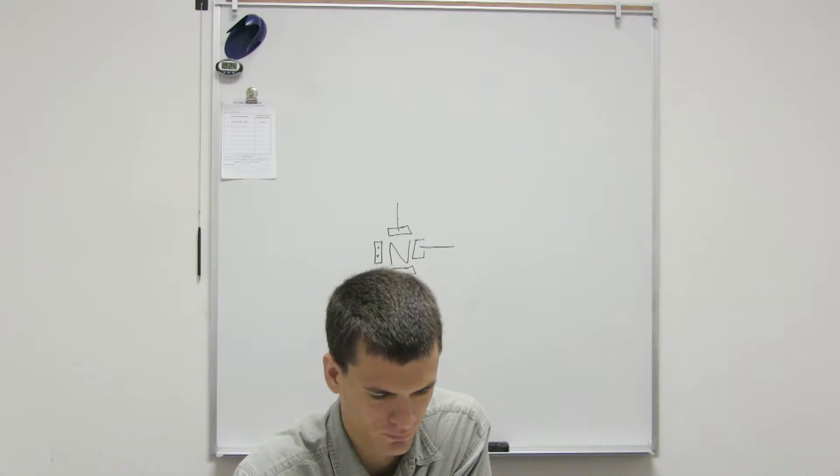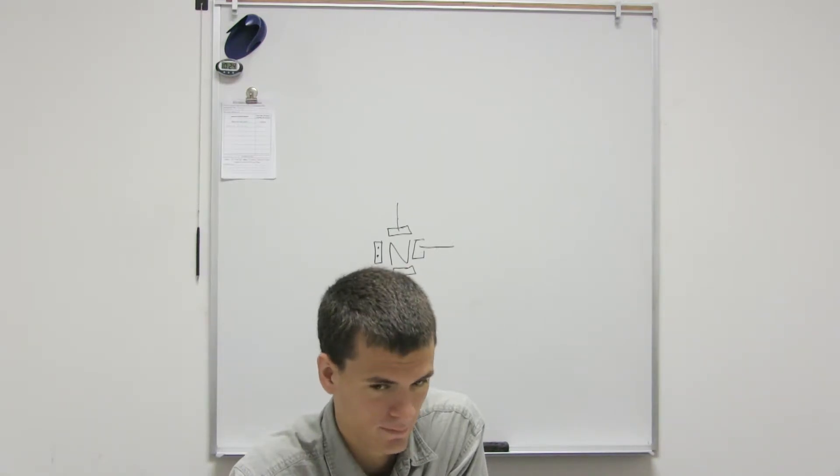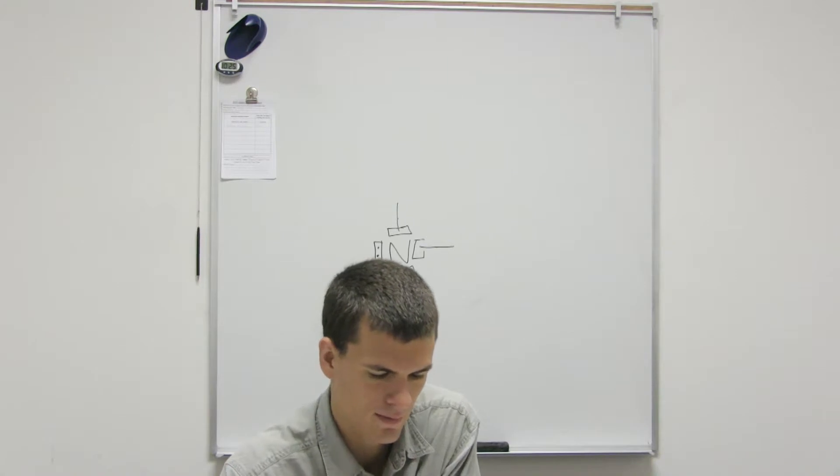So the difference between trigonal planar or bent is just, so all the bent ones will be, like they'll look linear, right? Yeah. And then just judging by like how many electrons?